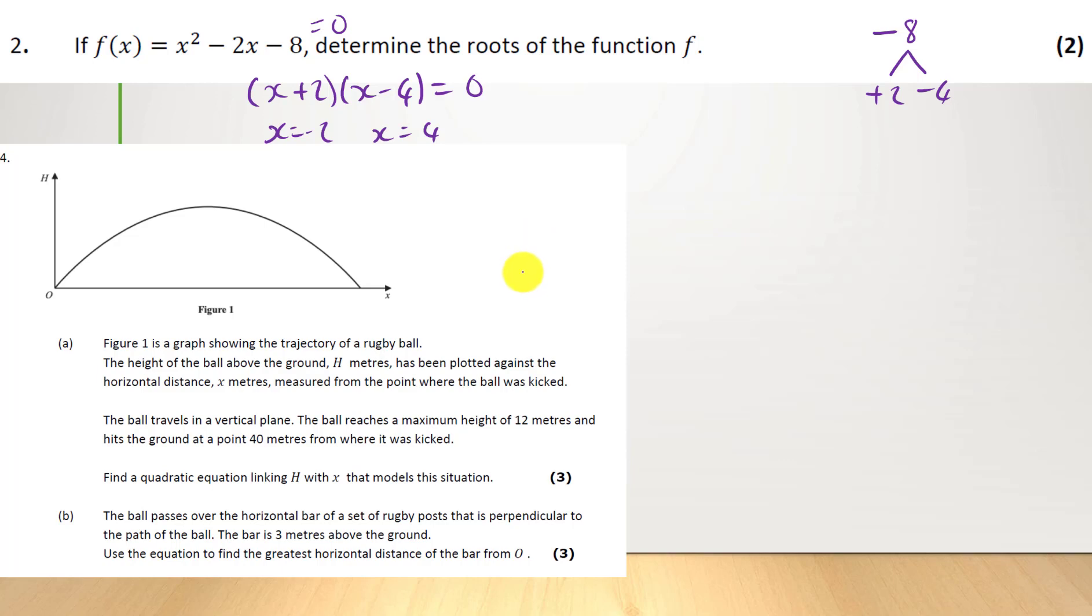Right, do pause this video and read the question and replay it once you read the question once or twice. So starting with this figure A, we've got to work out this graph based on the information. What's the key bits we have? We've got 40 meters from where it was kicked. So this must be 40. And the maximum height is 12.